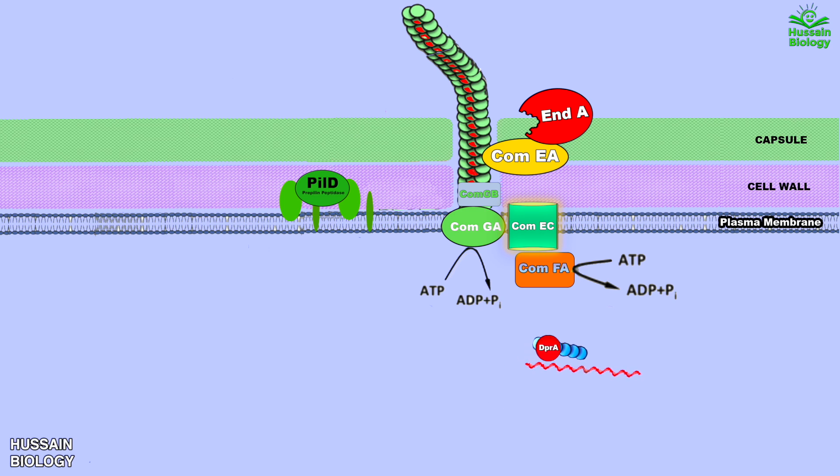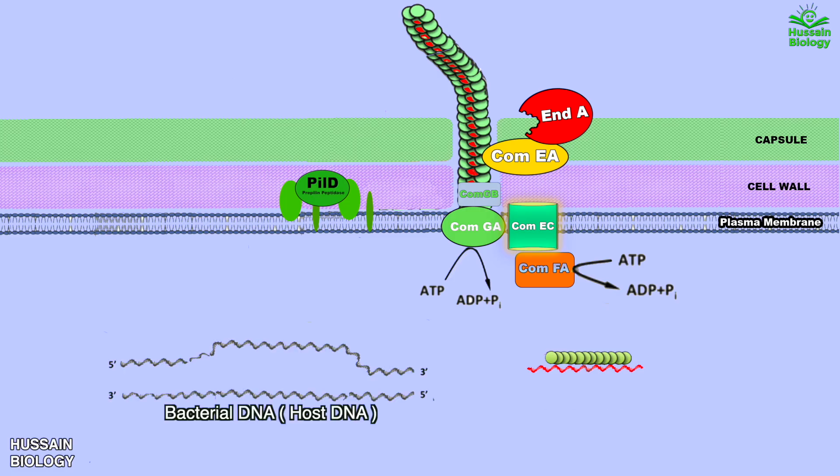After some time, DprA protein comes in and binds SSB-coated single-stranded DNA. Soon after, DprA starts recruiting RecA proteins towards the DNA as shown in the animation. When RecA starts binding, SSB proteins leave, and now we have ssDNA with RecA protein ready for recombination. The RecA filament then searches for homologous DNA sequences and promotes strand invasion to initiate homologous recombination.